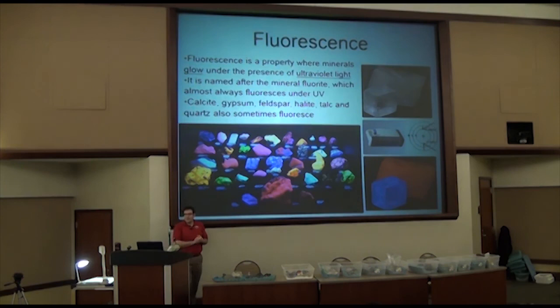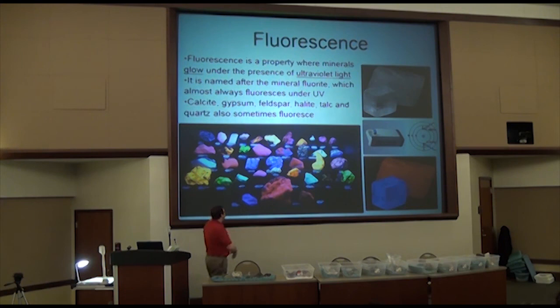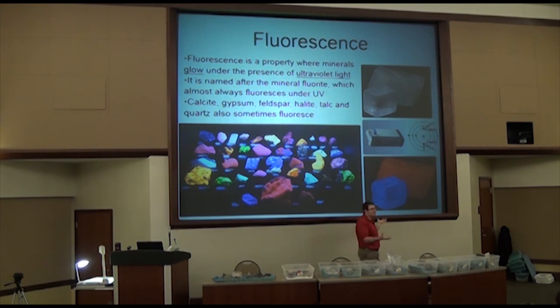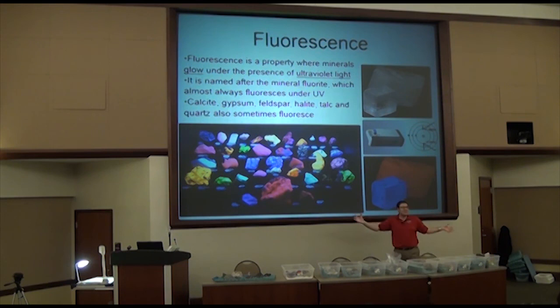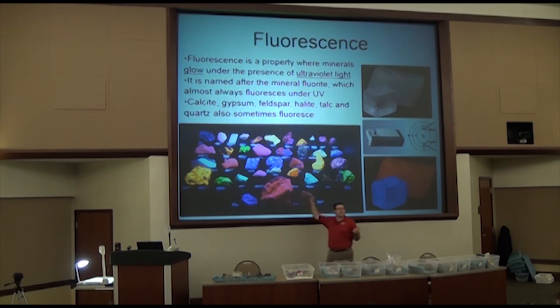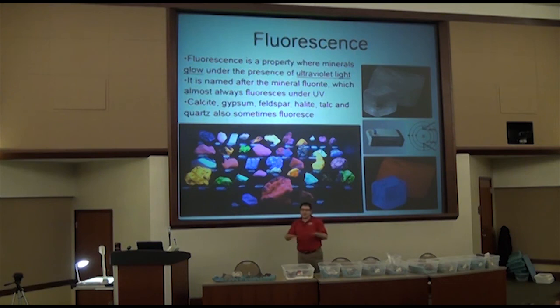Fluorescence is when a mineral glows under ultraviolet light — the same as a black light. You've probably seen this at cosmic bowling where stuff glows under black lights. This property is natural in some minerals. Essentially all fluorite is fluorescent — about 95% of it will glow under ultraviolet light. Often times the glowing color is completely different from how the mineral looks under daylight.